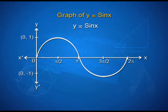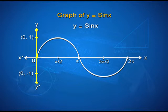This is the x-axis x'Ox and this is the y-axis yOy'. We begin with the origin and as it is an increasing function, we can see that the graph goes from 0 to 1 and then comes back to pi. In the same way we can plot the graph from pi to 2 pi. This is the graph of y = sine x.